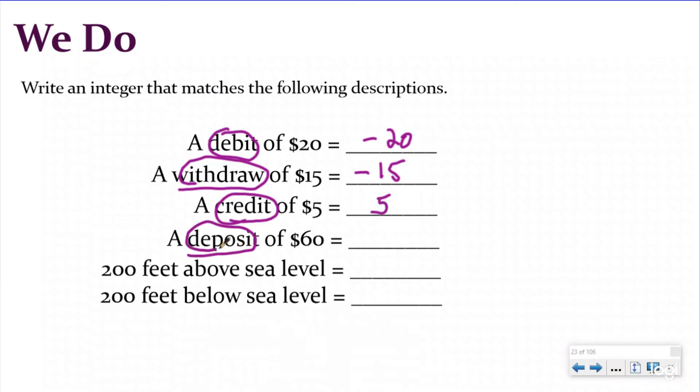A credit of five tells me that's going to be positive five. A deposit of 60. Now this one kind of confuses people. Think about what's happening in this scenario. If you have a deposit of 60, you're taking $60, you're putting it into the bank. So your bank transaction is going to be positive because you're adding money. So it's going to be a positive 60.